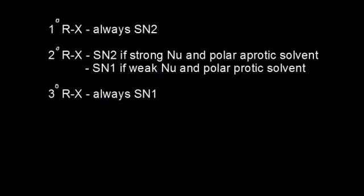Here's a table that summarizes SN1 versus SN2 reactions. The first thing you should do is look at the structure of the alkyl halide. If it's a primary alkyl halide, it's always going to proceed via an SN2 mechanism. SN2 mechanisms require decreased steric hindrance for the nucleophile to function properly, so primary alkyl halides are the least sterically hindered. A primary alkyl halide would not react via SN1 because SN1 produces carbocations, and a primary carbocation is not very stable. So primary alkyl halides will always be SN2.